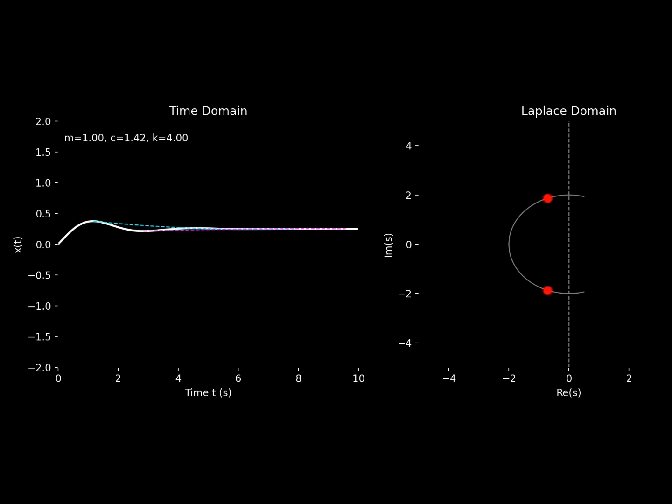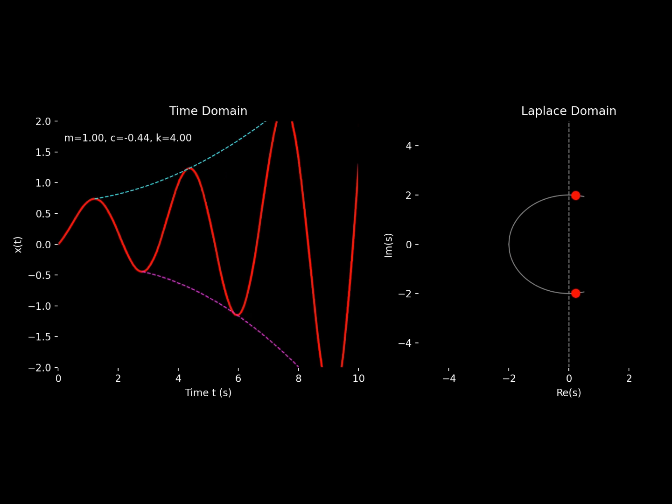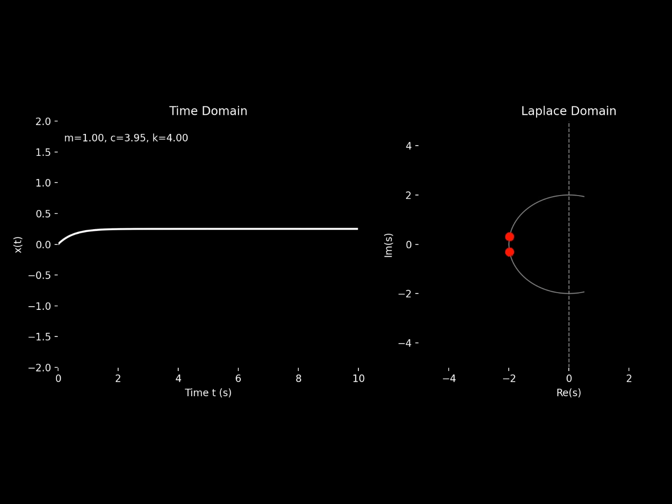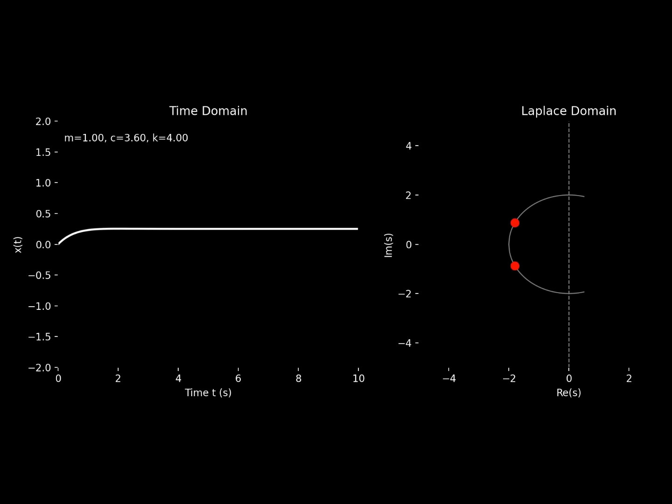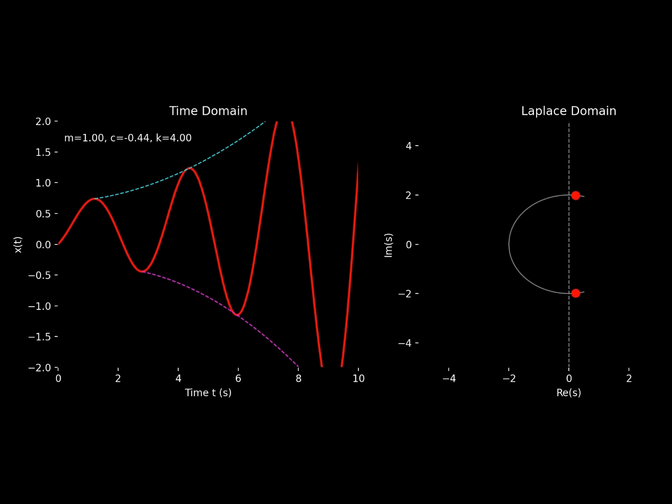The pole location influences whether the system is stable, unstable, or subject to pure oscillation. Gain-based control is performed by a multiplication factor on the transfer function, and it causes the roots to follow a path called the root locus, as you can see here. If at any point the root goes into the right half plane, which is the unstable region, it can cause instability.